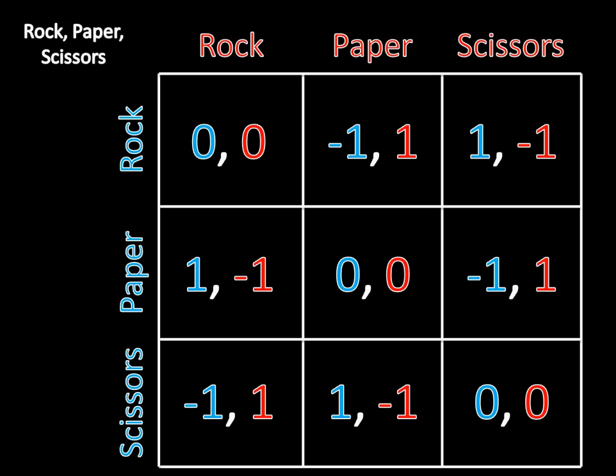If both players play the same thing, they both get nothing — essentially it's a draw. And if a player plays the item that beats the other player, then the winning player gets one and the losing player gets negative one. It's a very simple, straightforward strategic form game reflecting exactly what you've been playing: you can win, lose, or draw.